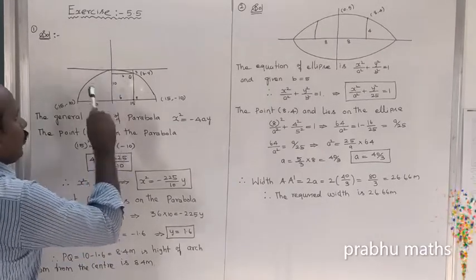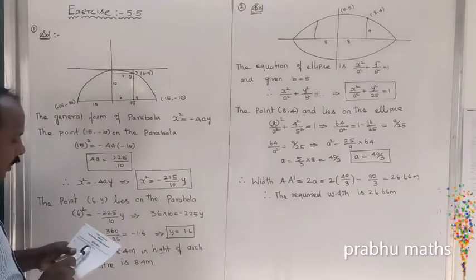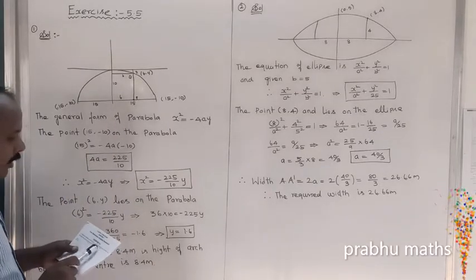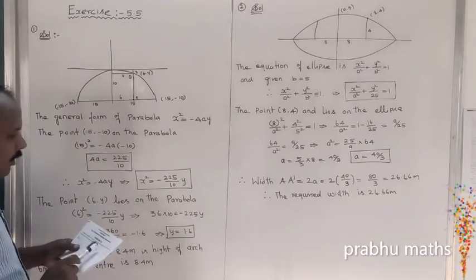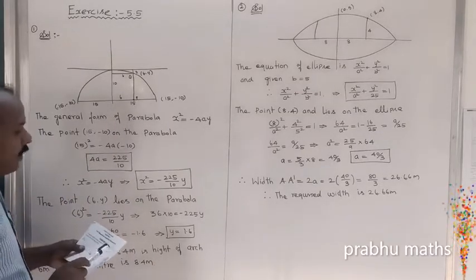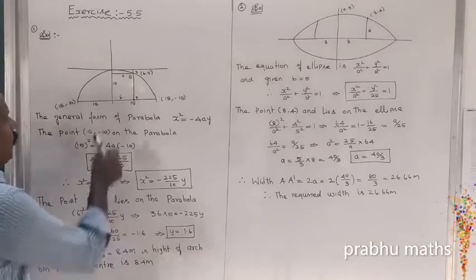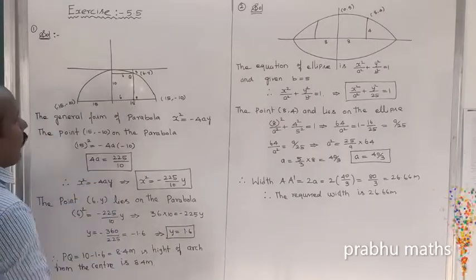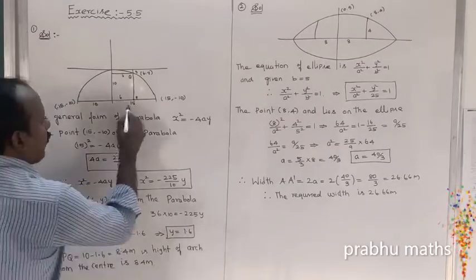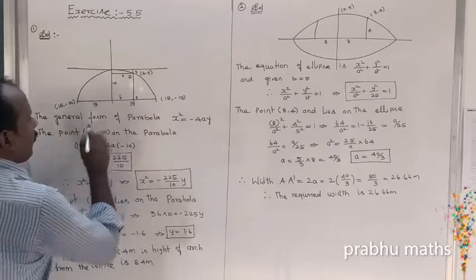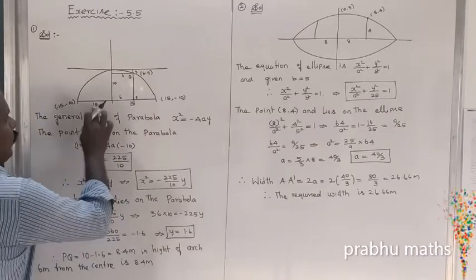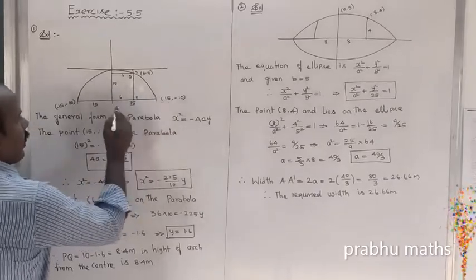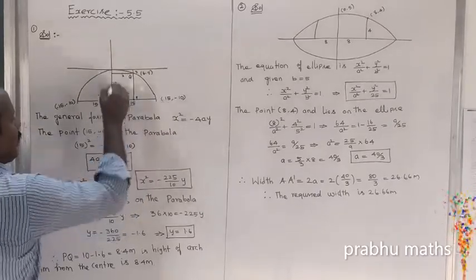The width at the bottom is 30 meters. So 30 meters means this is 15 and this is 15, so 15 plus 15 is equal to 30.